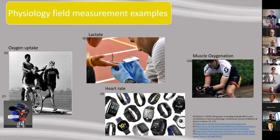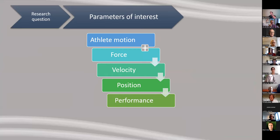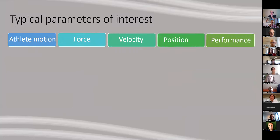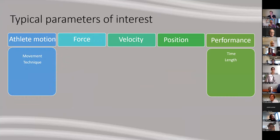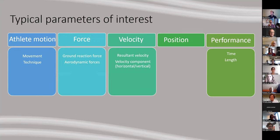My parameters of interest form a performance cascade starting with athlete motion down to performance. Typical parameters of interest include length and time for performance, movement or technique in different sports, ground reaction force or aerodynamic forces, velocity components, trajectory analysis, and turn analysis — for example in alpine skiing.